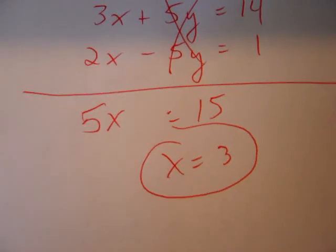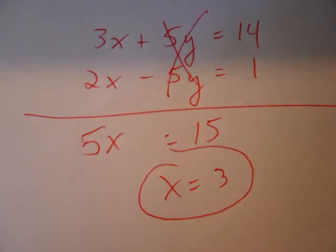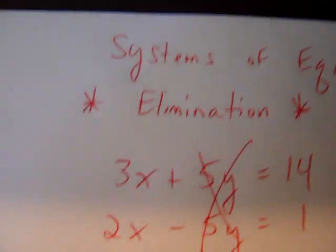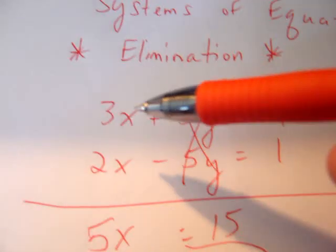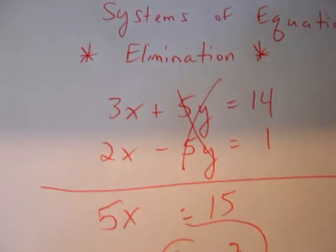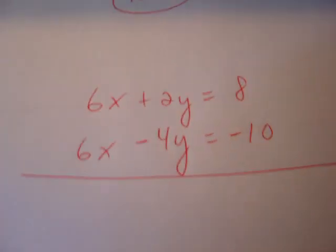Remember, we want the intersection point x comma y. To get the y value, you would simply replace x equals 3 into either here or here and solve. Now, moving right along.